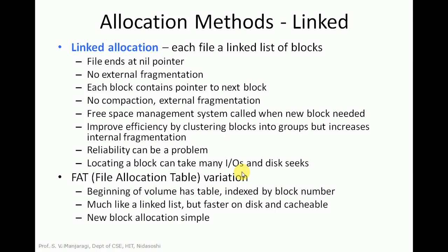Now let us move on to linked allocation. In linked allocation, each file is a linked list of blocks, and the file ends at a null pointer. There is no external fragmentation possible here. In contiguous allocation there was a problem of external fragmentation and a need for compaction, but in linked allocation there is no possibility of external fragmentation. Each block contains a pointer to the next block, so no compaction is needed.